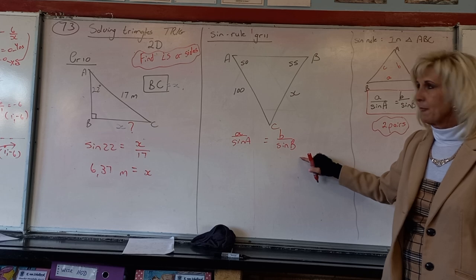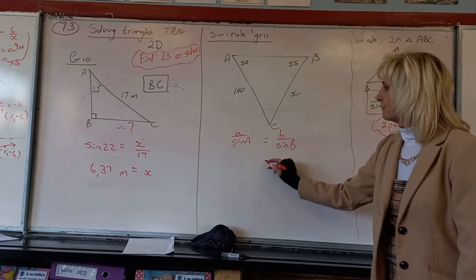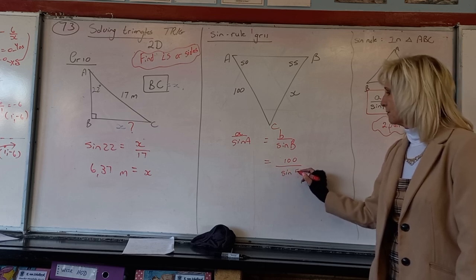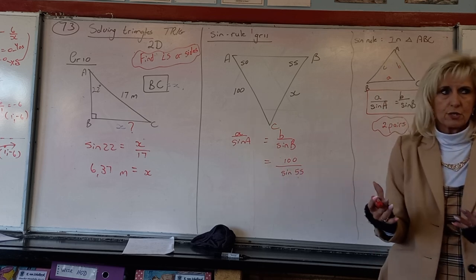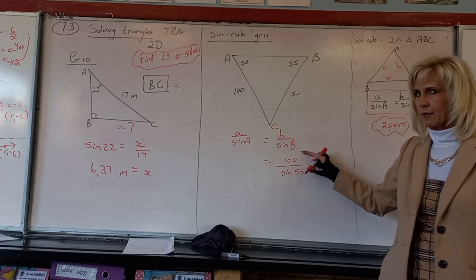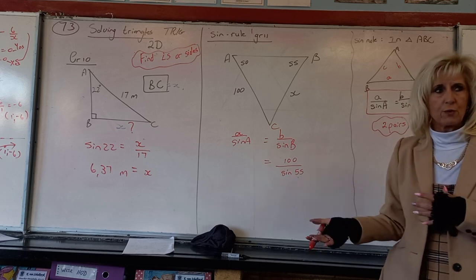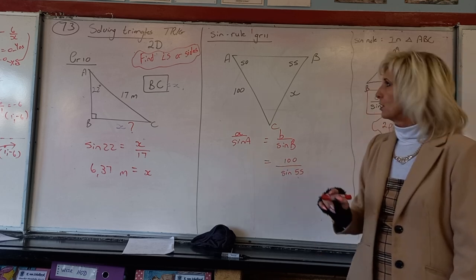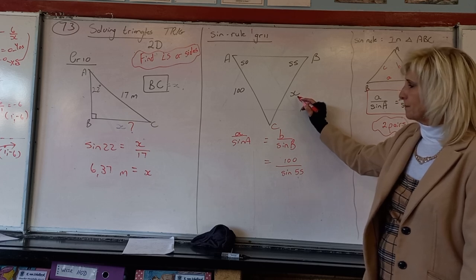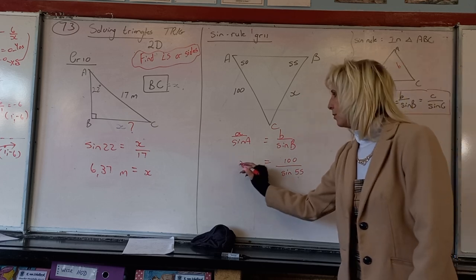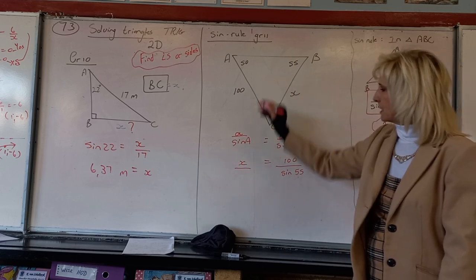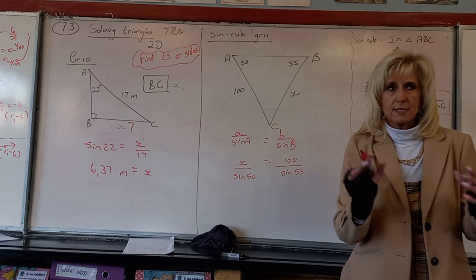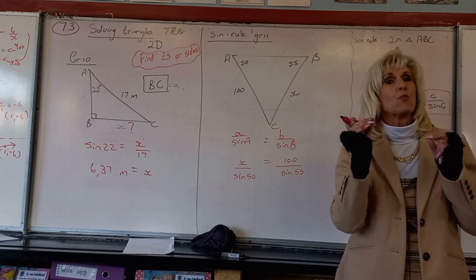So the equation is: 100/sin 55° = x/sin 50°. You cannot swap a side into an angle's position — they must stay as pairs. The side goes on top and the sine of the angle goes on the bottom. That is the essence of the lesson: it must always be pairs, with one unknown.